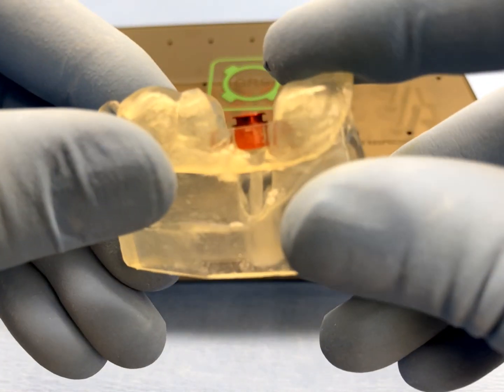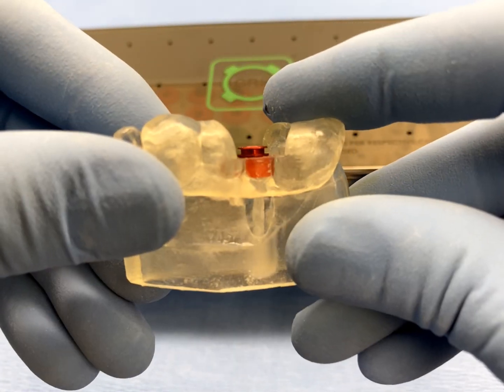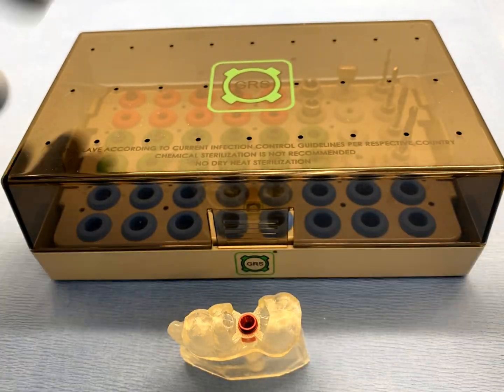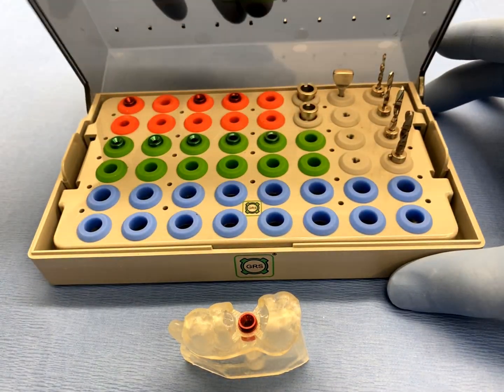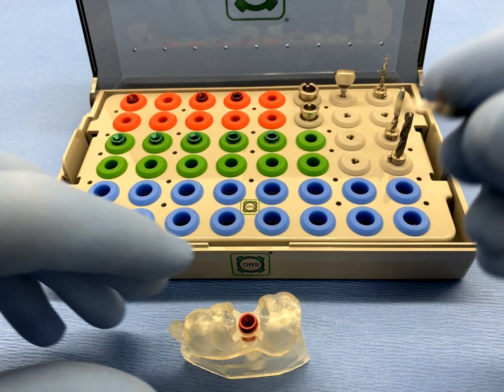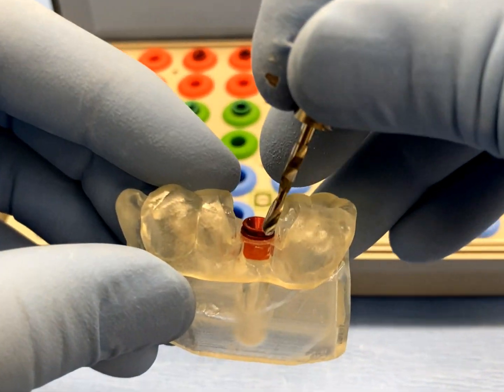After verifying that the GRS surgical sleeve has been seated completely, simply insert the initial pilot drill with a loose fitting drill stop through the GRS surgical sleeve until it reaches the bottom of the hole in the 3D printed model.